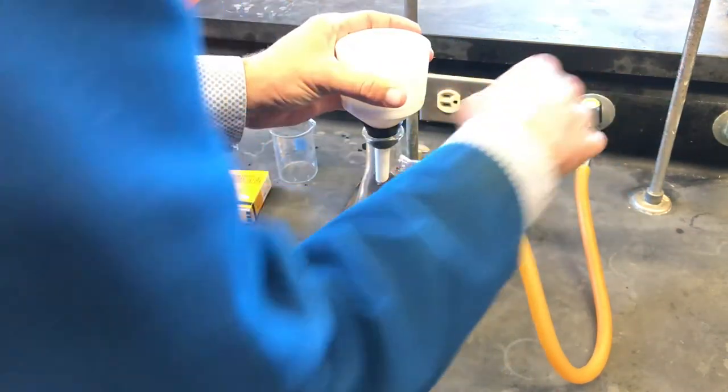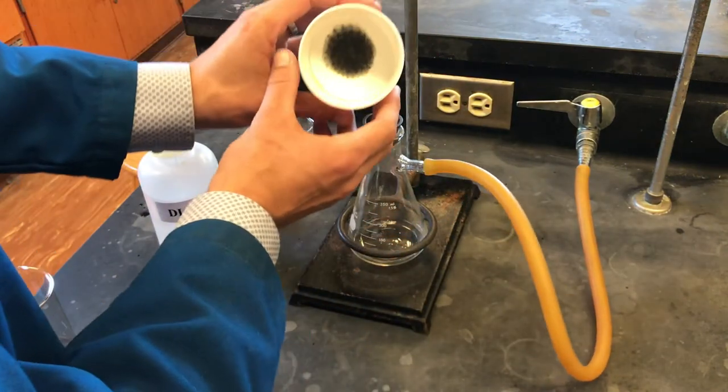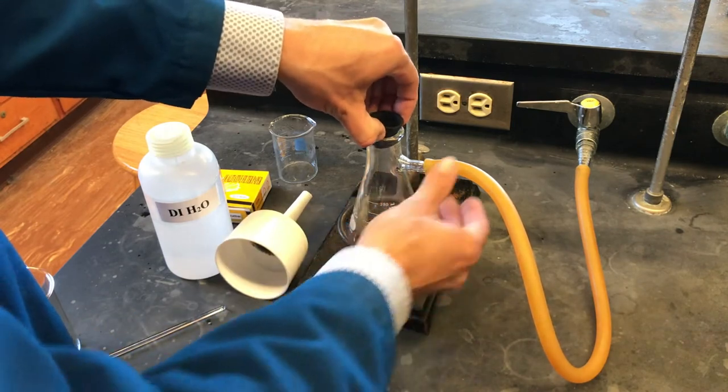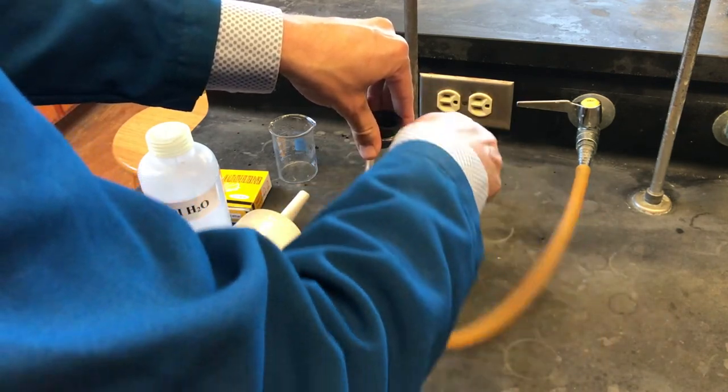As a result, our impurities are collected in the center of the filter paper and our filtrate, which is the solution in the flask, can carry on to the next synthetic step.